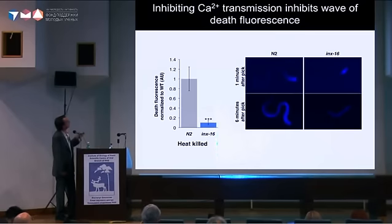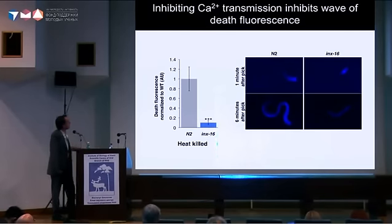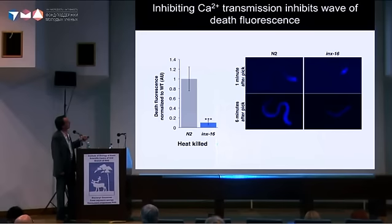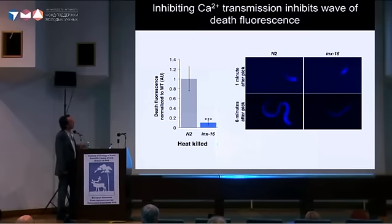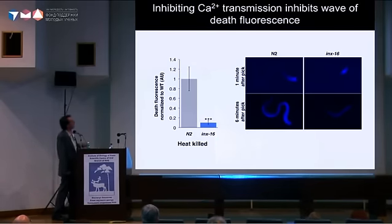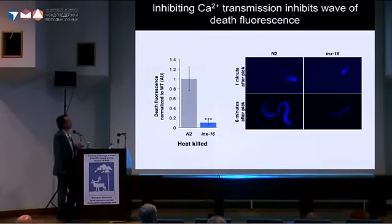We looked at worms lacking INC-16 which showed reduced death fluorescence. In a wild-type worm killed with heat, after one minute and six minutes you see the death fluorescence starts off at the top of the intestine and then moves in a wave down the intestine. In the INC-16 mutant, we get the initial burst of fluorescence in the head, but it never moves along the intestine. This implies that INC-16 is actually transmitting this blue fluorescent wave — there's a propagation by INC-16 of the death fluorescence.